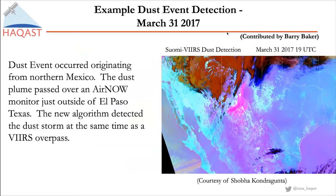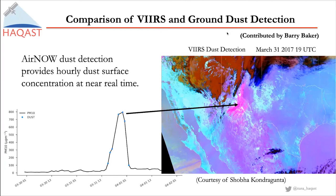Here's an example from the Chihuahuan Desert. What we're showing is a VIIRS image of the dust detection — in pink is where dust was detected from the VIIRS satellite. You can see it blows up from northern Mexico and extends over El Paso and into New Mexico and Texas. Looking at a PM10 monitor in El Paso, the background PM concentration is very low, but as soon as there's a dust storm, you see a huge spike. The hours detected as dust, shown in blue, correlate exactly with where the plume was observed by satellite.